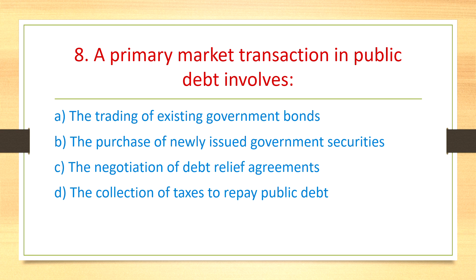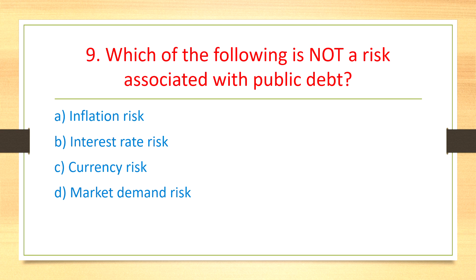Question 10: Which of the following is NOT a risk associated with public debt? Options are: inflation risk, interest rate risk, currency risk, and market demand risk. Inflation risk means prices are high, interest rate risk means rates are high, and currency risk means currency fluctuates. The answer is market demand risk — it is NOT a risk associated with public debt.